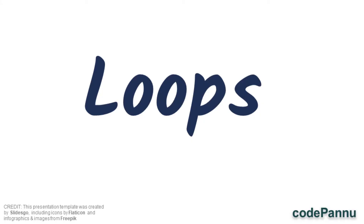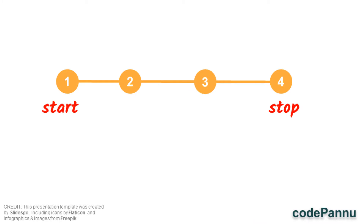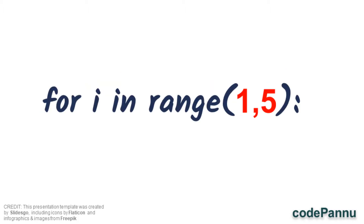Hi, this is the fourth video for the concept of loops. We are going to continue to see more examples about for loops. In the last video we saw an example in which i was increased by 1 — it was 1, then became 2, then 3, then 4. But instead of increasing by 1, can we increase by 2, or 3, or any number? Yes, we can.